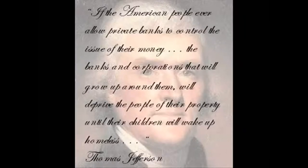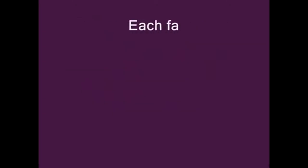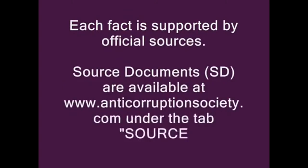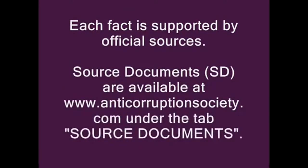If the American people ever allow private banks to control the issue of their money, the banks and corporations that will grow up around them will deprive the people of their property until their children will wake up homeless. — Thomas Jefferson. Following is a timeline demonstrating when and how a private central banking cartel got control of the government, the people, and the assets of the United States. Each fact is supported by official sources. Source documents are available at www.anticorruptionsociety.com under the tab Source Documents.